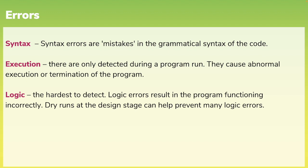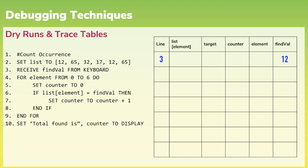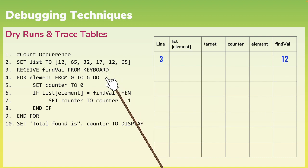Let's move on to have a look at debugging techniques, starting with dry runs and trace tables. Dry run testing is usually a paper and pencil exercise where the developer manually steps through an algorithm, using sample data to record the value of a variable in a trace table as the algorithm unfolds. Here we have a counter algorithm and we are going to ascertain whether this algorithm works or not. You can see from the trace table that on line 3, find value equates to 12. We then move on to the next line and update our trace table. On line 4 we set element to 0.